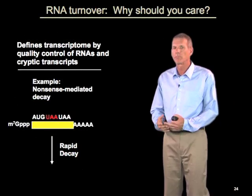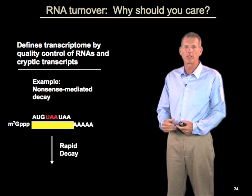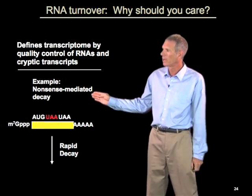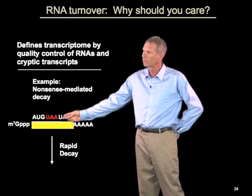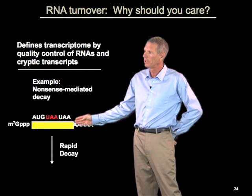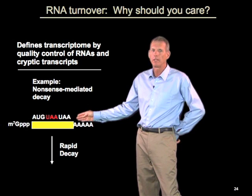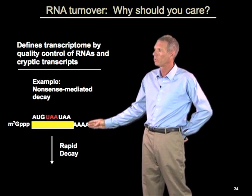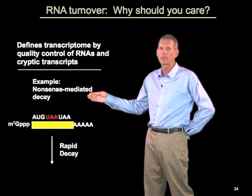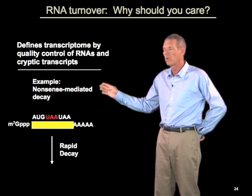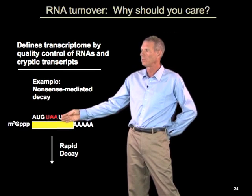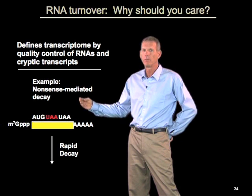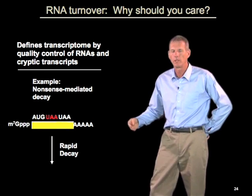Second, RNA turnover plays a significant role in defining the transcriptome by degrading many mRNAs which are aberrant. For example, mRNAs which contain nonsense codons, shown here as red, so that you don't translate the entire open reading frame, are recognized and rapidly degraded in eukaryotic cells. This is a process called nonsense-mediated decay. There are other quality control pathways which recognize and degrade aberrant or non-functional mRNAs, which is important in preventing truncated proteins and keeping the cytoplasmic mRNA pool restricted to functional mRNAs the cell wants to use to produce proteins.